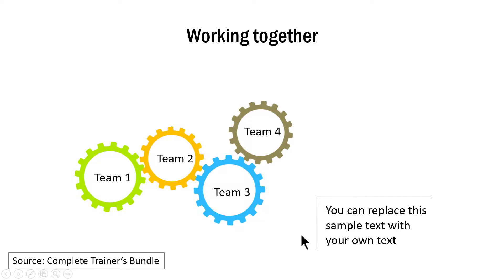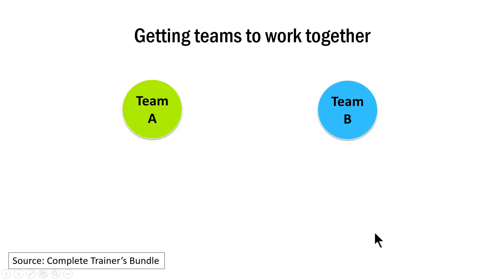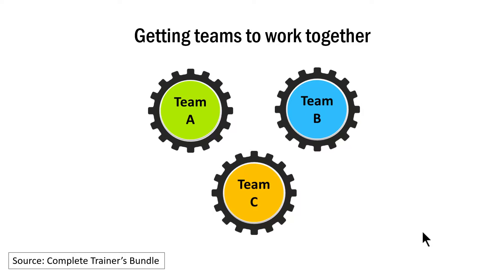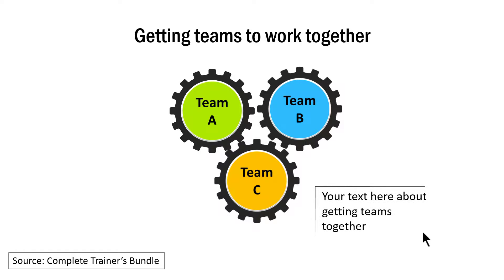Let me show you another template. This one explains the concept of getting teams to work together. Here I have Team A, Team B, Team C, and then I bring in the gears for each of the teams. They move closer and then they start working together. Complete Trainers Bundle provides you tons of different options with advanced animations to help you communicate any concept you want.